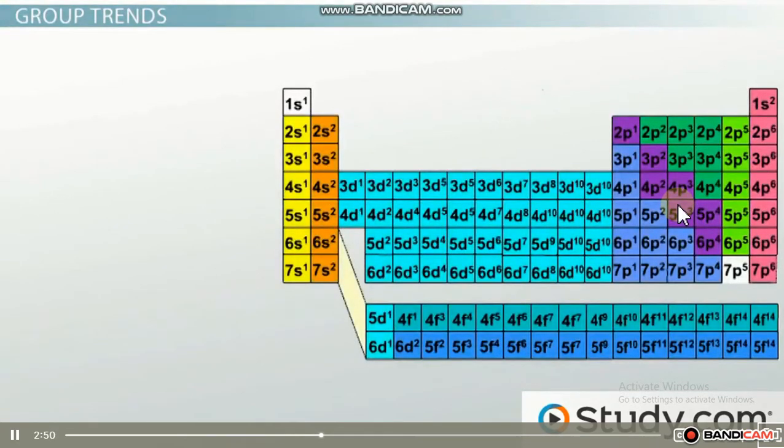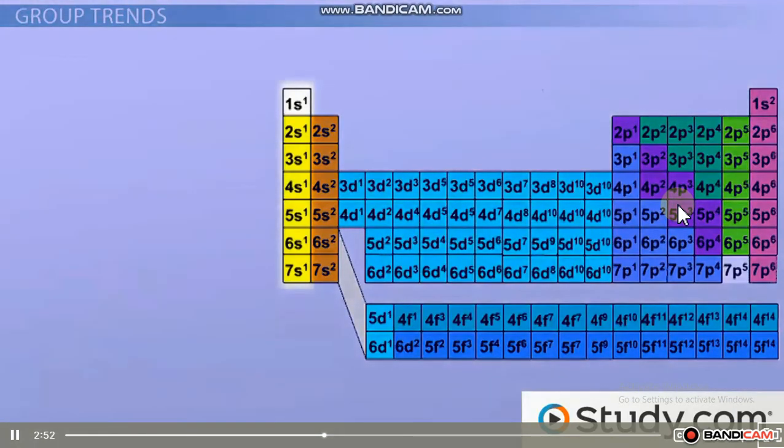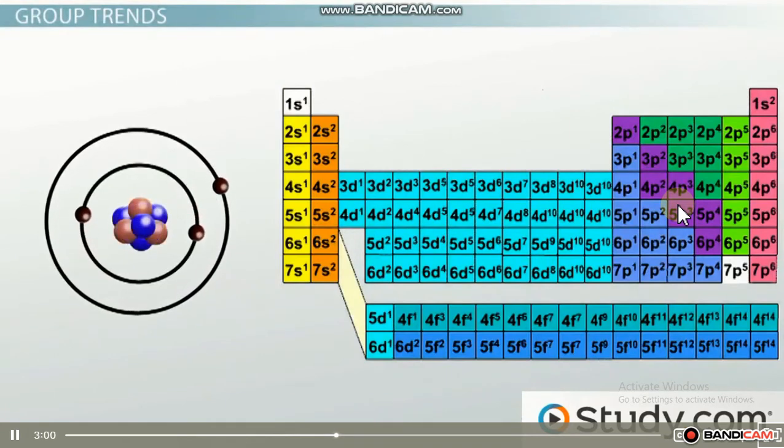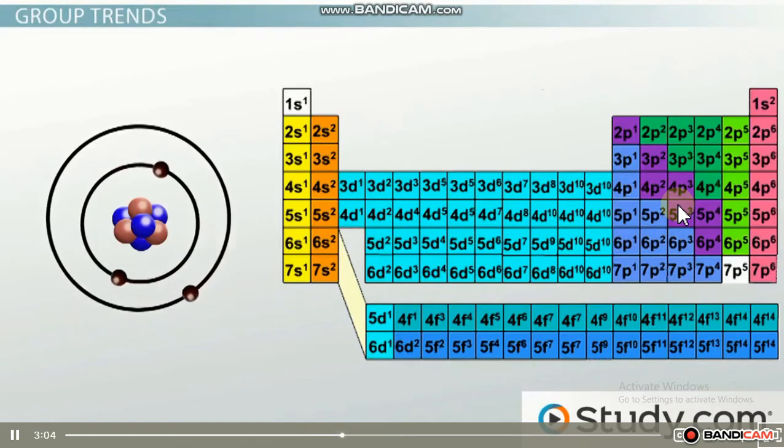For example, if we compare elements in the first column on the periodic table, hydrogen has one electron, and it is located in the first energy level. Lithium has three electrons, two of them filling the first energy level and one of them, the valence electron, needing to be added to the newly created second energy level.